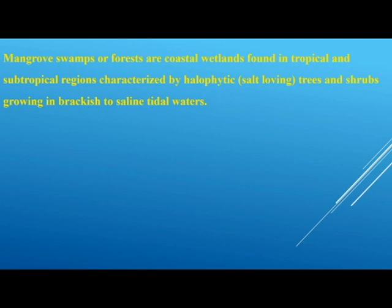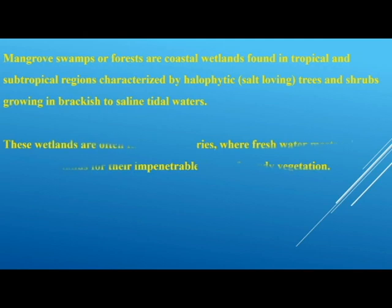Mangrove swamps or mangrove forests are coastal wetlands found in the tropical and subtropical regions, characterized by halophytic, or salt-loving, trees and shrubs growing in brackish — that is slightly salty — to saline or salty tidal waters. These wetlands are often found in estuaries where freshwater meets saltwater, and are infamous for their impenetrable maze of woody vegetation. In other words, students, if you end up in the middle of a mangrove swamp, chances are you're going to be stranded for days.